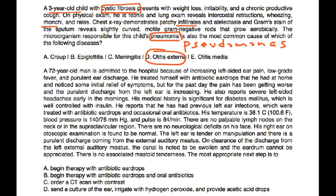Clinical vignette: A 72-year-old man is admitted for increasing left-sided ear pain, low-grade fever, and purulent ear discharge. He used antibiotic ear drops at home with some initial relief, but pain has worsened over the past day with increasing discharge and severe left-sided morning headaches. His history is significant for well-controlled diabetes on insulin, and previous ear infections treated with ear drops and occasional oral antibiotics.